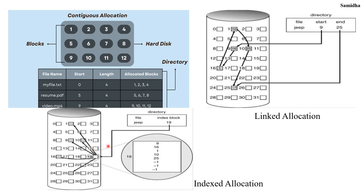Next is indexed allocation. In this, all the pointers are brought together into one block called the index block. Each file has an index block which is an array of disk blocks. The directory entry has the address of the index block — for example, block 90 — and the index block holds the addresses of the actual disk blocks of the file. All these disk blocks are brought together under an array, which is termed indexed allocation.